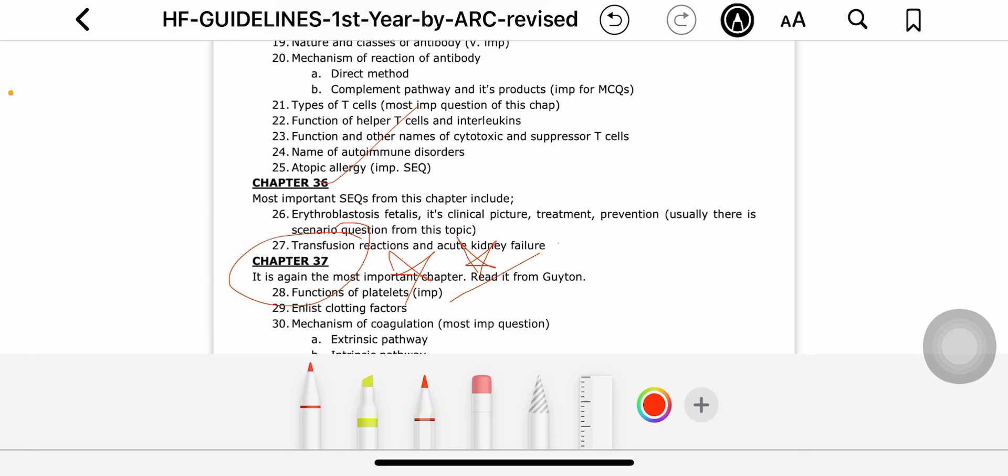Clot retraction is a very important short question that comes in exams. You should know this. Then later in great detail, extrinsic pathway and intrinsic pathway will be written. You should just study these figures - Figure 37.3 for intrinsic pathway and Figure 37.4 for extrinsic pathway. You should know both these pathways very well and be able to draw them.